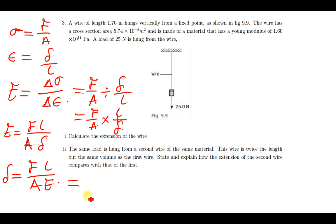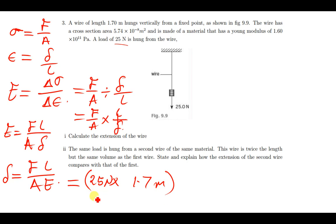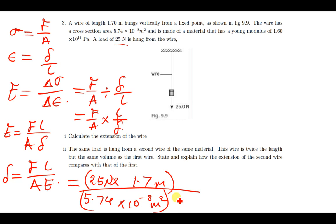We now substitute the values. The force given is 25 newtons, the length given is 1.7 meters. Everything is divided by the cross-sectional area of 5.74 × 10⁻⁸ meters squared, multiplied by the Young's modulus of 1.6 × 10¹¹ pascals.